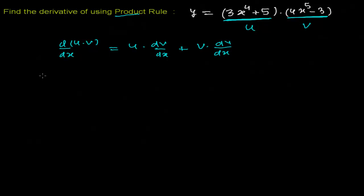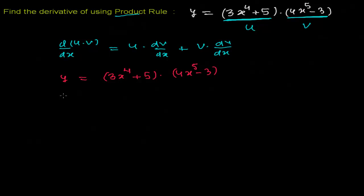My given function is: y equals (3x to the power 4 plus 5) times (4x to the power 5 minus 3). Now I'm going to differentiate both sides with respect to x.